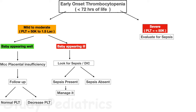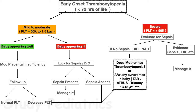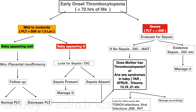If thrombocytopenia is severe with platelet count less than 50,000, first evaluate for sepsis. If sepsis is present, manage accordingly. If no sepsis or DIC is present, consider neonatal alloimmune thrombocytopenia. If that is not confirmed, look for maternal thrombocytopenia or associated syndromes like TAR, ATRUS, Fanconi's anemia, or trisomy 13, 18, or 21. If none found, consider TORCH profile, viral infections, inborn errors of metabolism, or renal vein thrombosis.